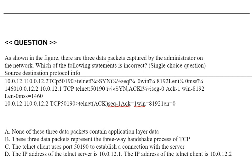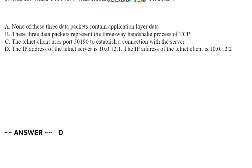Option C: The Telnet client uses port 50190 to establish a connection with the server. Option D: The IP address of the Telnet server is this; the IP address of the Telnet client is this. Correct answer is Option D.